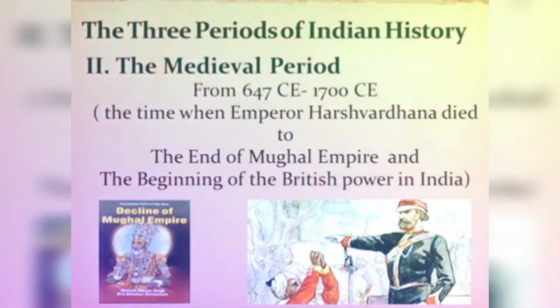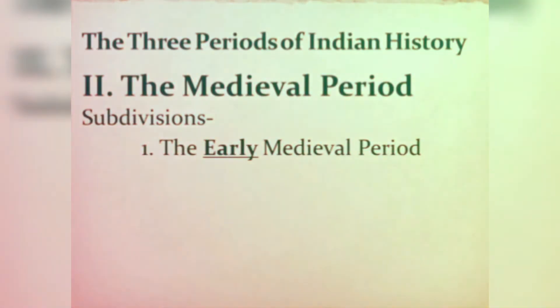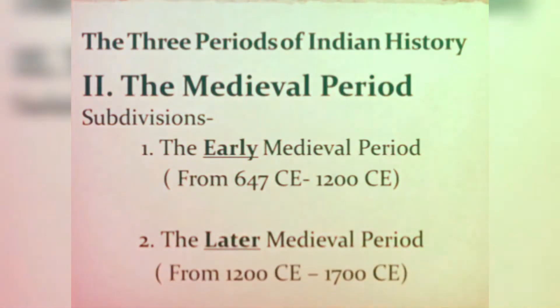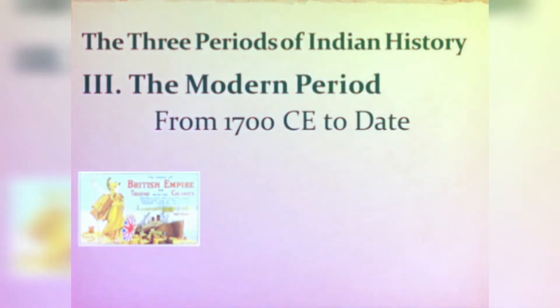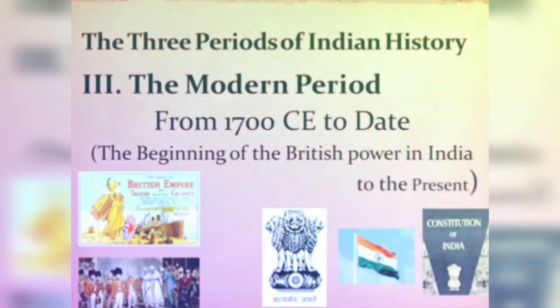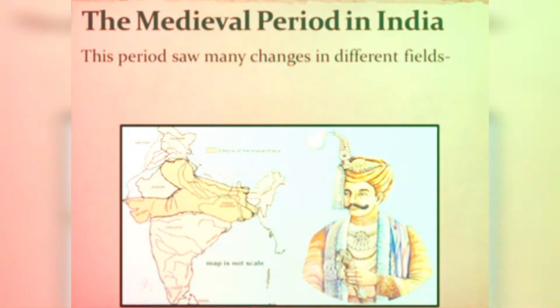The medieval period in India is further divided into 2 parts. The first is the early medieval period, from 647 CE to 1200 CE. The second is the later medieval period. The third period, the modern period, extends from 1700 CE till the current date — from the time British power began in India to the present age. Now let's come to the main point and start the medieval period in India.